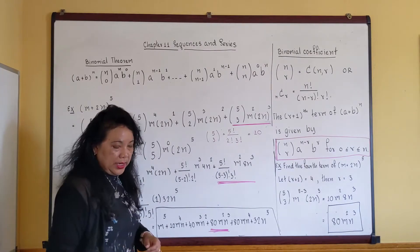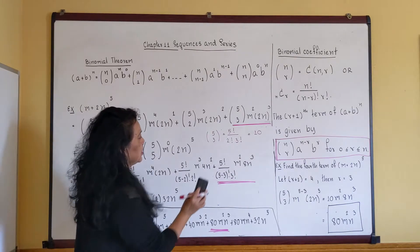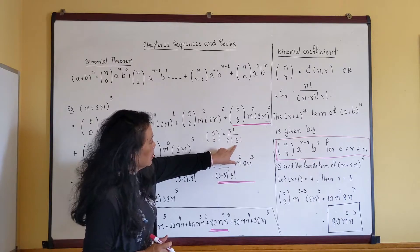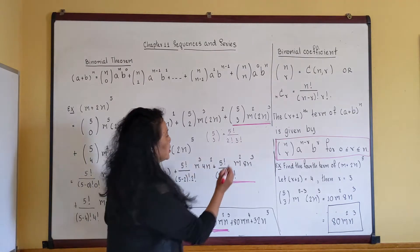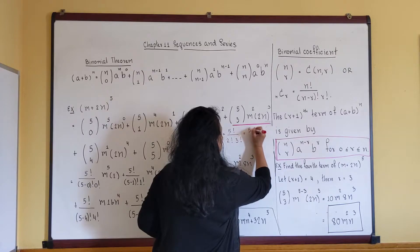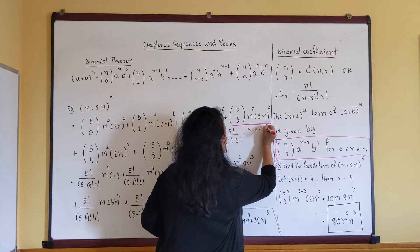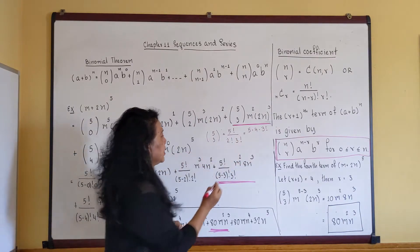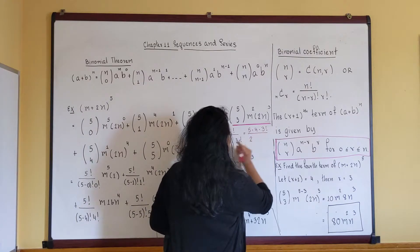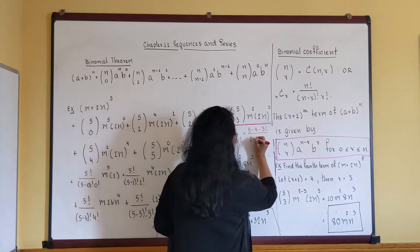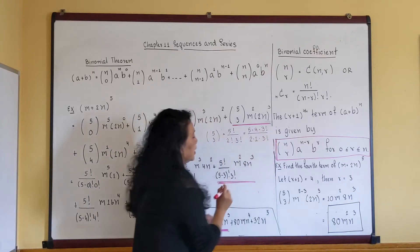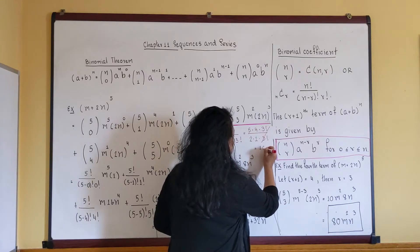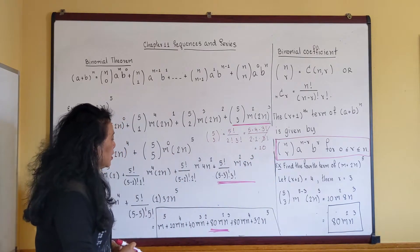Another method: rewrite five factorial as 5 × 4 × 3 factorial. I stopped at three factorial because I want to cancel it with the three factorial in the denominator. That leaves 5 × 4 over 2 × 1, and the answer is still 10. Use whichever method you're most comfortable with.